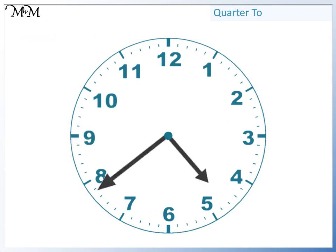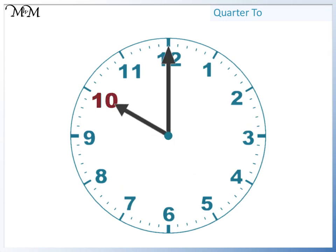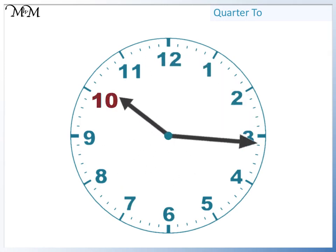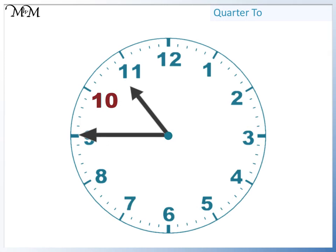Finally we'll start at ten o'clock. From here the minute hand moves to nine, and the hour hand moves closer to eleven. Because the minute hand is pointing to nine, the time will be quarter to. It is quarter to the next hour, which is eleven. So the time is quarter to eleven.